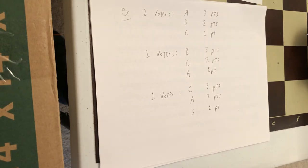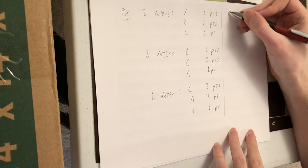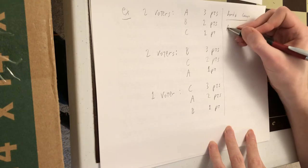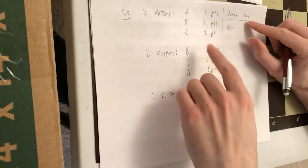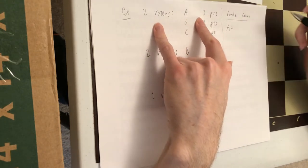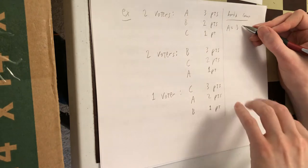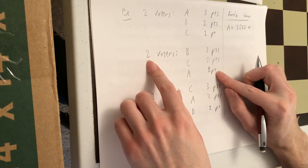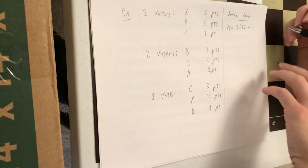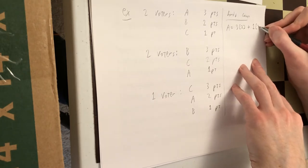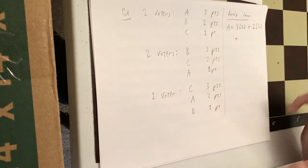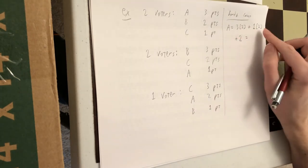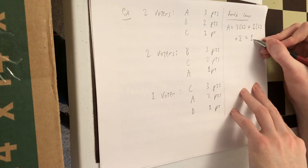Our last voter thinks C is the best and gives that candidate C three points. And A is the second best. So they give them two points. And B is the worst, one point. All right. So let's find each candidate's Borda count. So A is getting three points from these two voters. So three votes from each of them. So three times two. And these two voters give A one point each. So two times one. And our last voter gives A two points. So that comes out to six plus two plus two, which is 10.